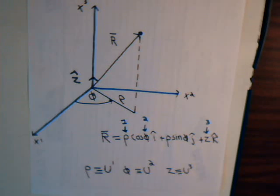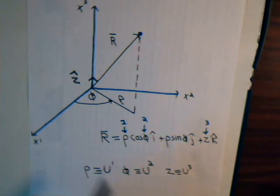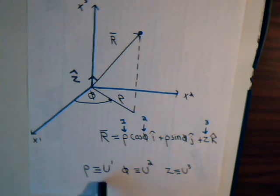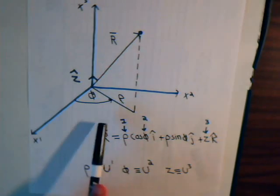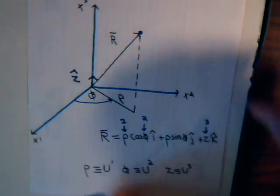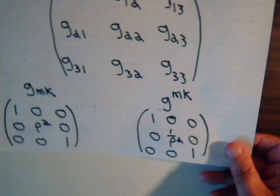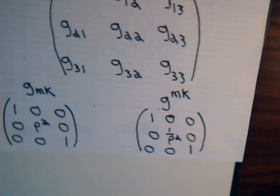And then, in the previous videos, we had labeled our curvilinear axis as u with a superscript numeral. So, rho will be u1, psi u2, and z u3.